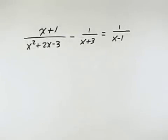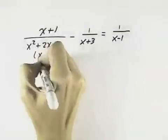Here we want to solve the rational equation. To do that, I'm going to first multiply by the least common denominator. So I need to know what that is.